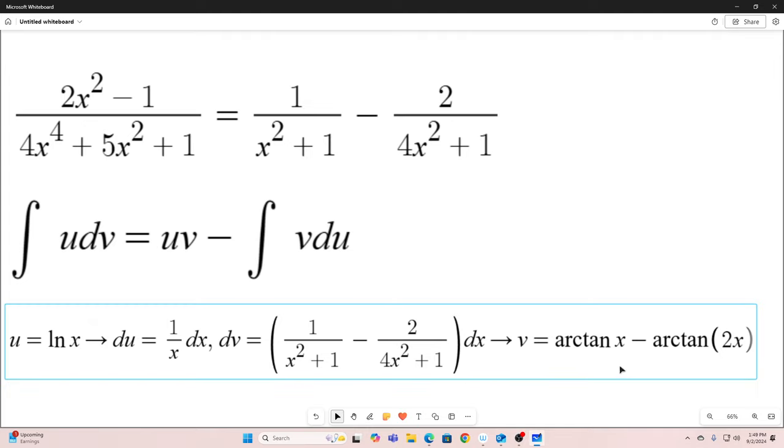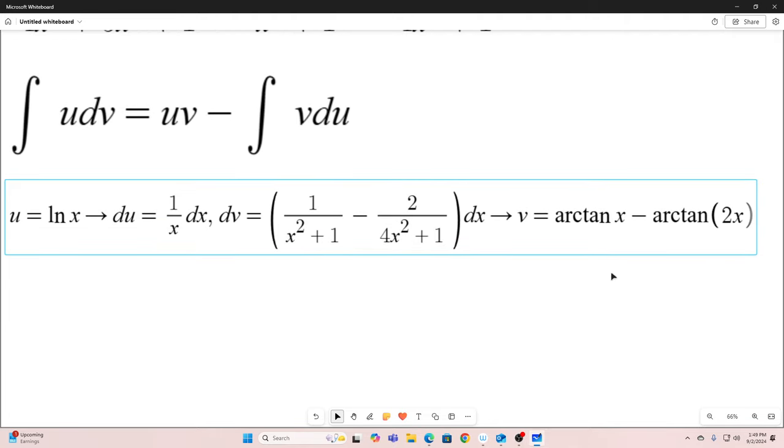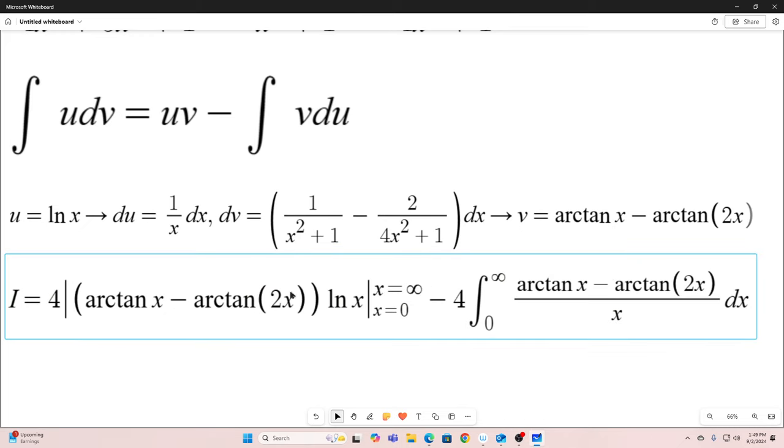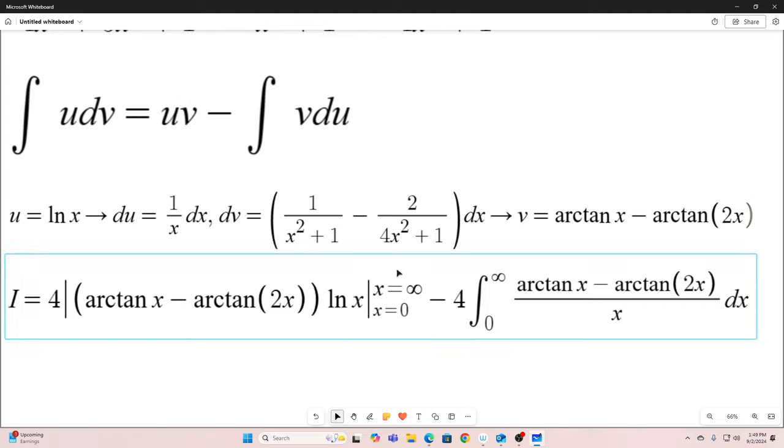And that implies that v is equal to arctan x minus arctan 2x. I'm not going to show the work there. Anybody watching this channel can easily anti-differentiate both of those. So this is what we get. We have the value of our original integral is equal to our u times v part evaluated at the bounds. That's right here.